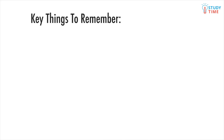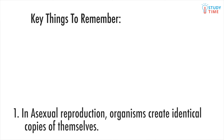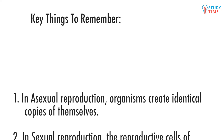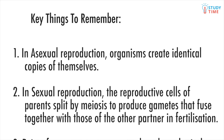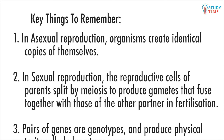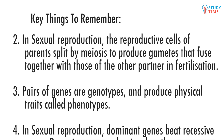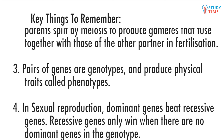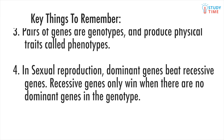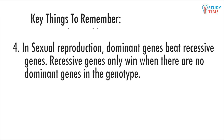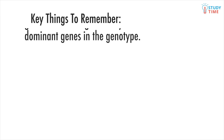Here are some key things to remember. In asexual reproduction, organisms create identical copies of themselves. In sexual reproduction, the reproductive cells of parents split by meiosis to produce gametes that fuse together with those of the other partner in fertilisation, giving genetic variation. Pairs of genes are genotypes, and produce physical traits called phenotypes. In sexual reproduction, dominant genes beat recessive genes. Recessive genes only win when there are no dominant genes in the genotype.